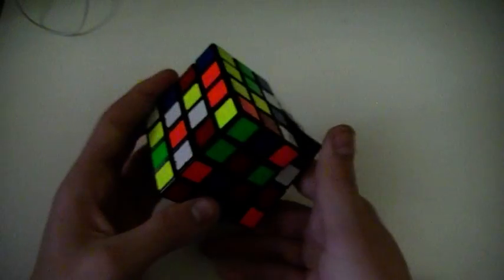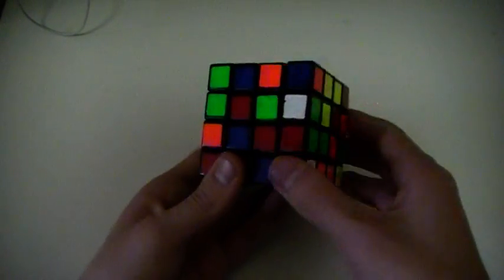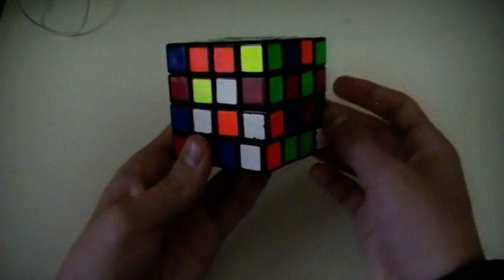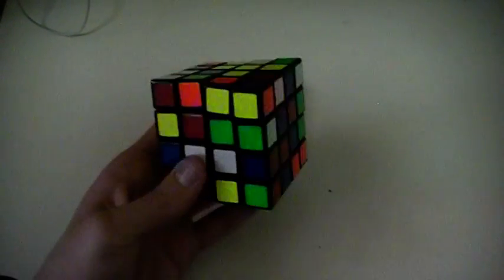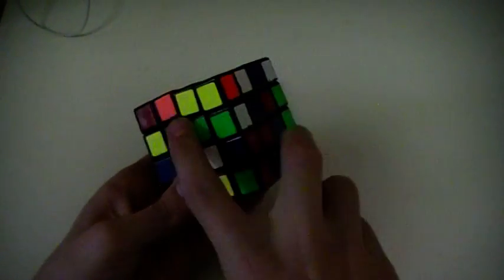I can do like R', R', then that. Then U2, R', and then I can make these two reds.